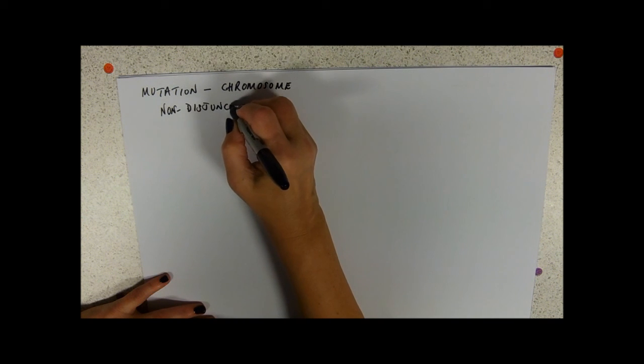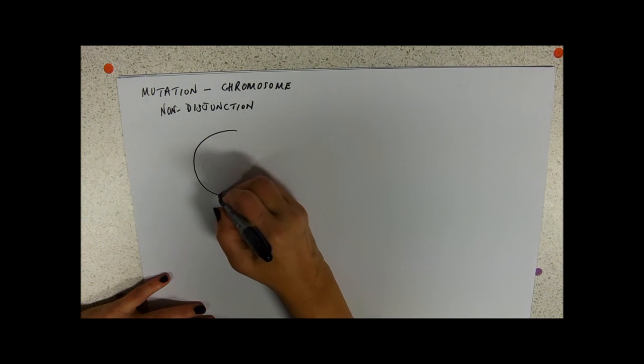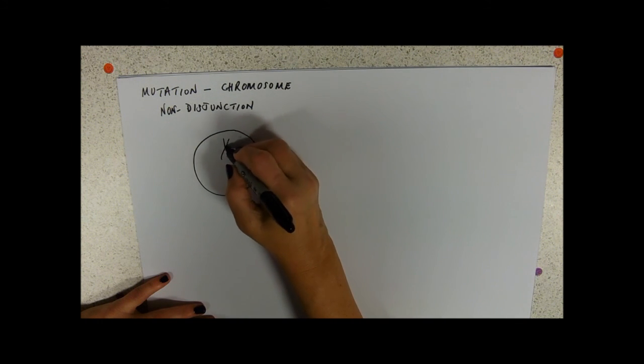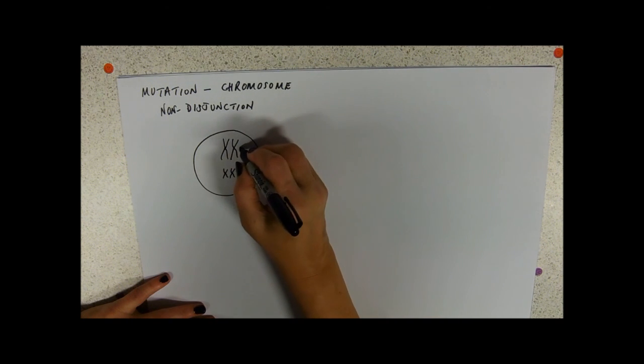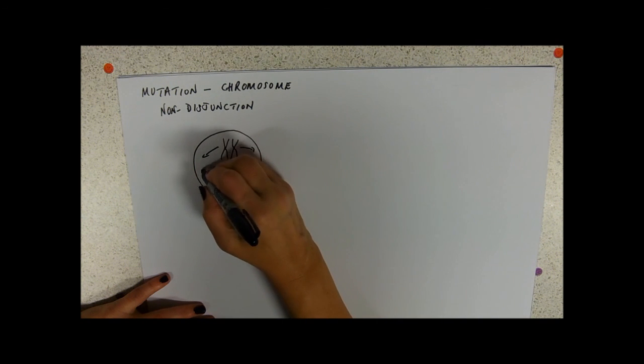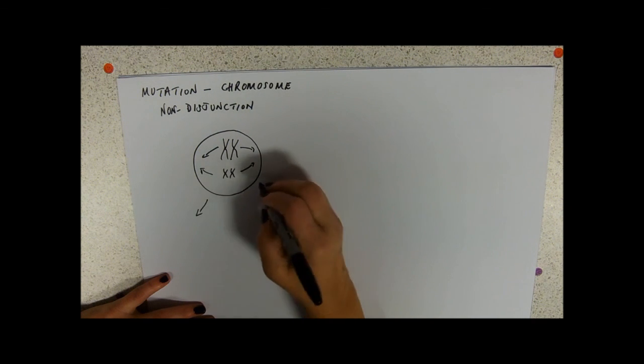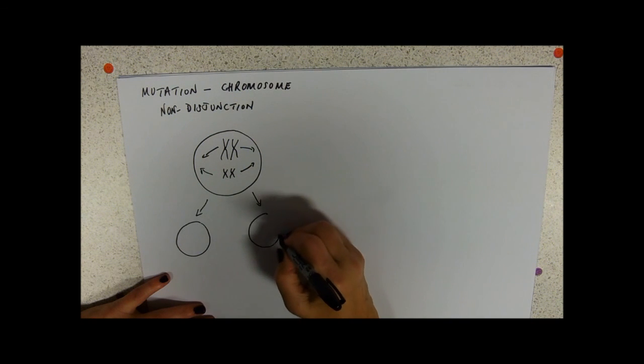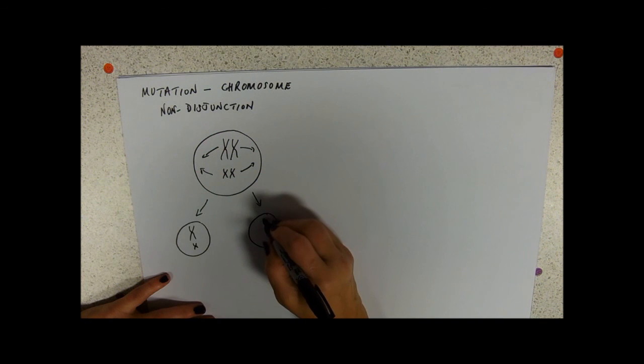Imagine what normally happens in meiosis. We've got our homologous pairs - one of them heads off that way and the other one heads off the other way till they reach the poles. In meiosis you'd get one long, one short, and then the chromatids split off.